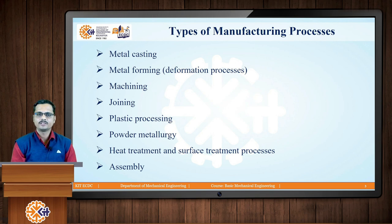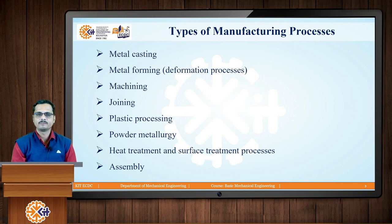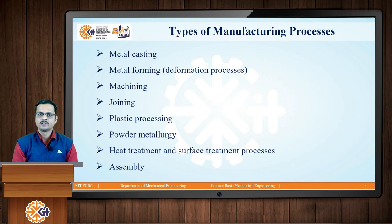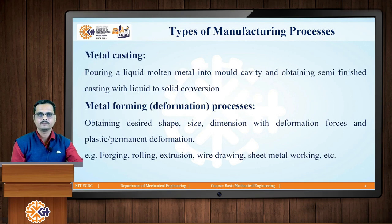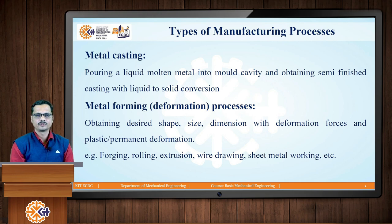Metal casting, metal forming, machining, and joining are called the basic or major manufacturing processes. Whereas plastic processing, powder metallurgy, heat treatment, surface treatment, and assembly are the sub-processes of all these. In this session we are going to identify the basics involved in the four major manufacturing processes: metal casting, metal forming, machining, and joining.